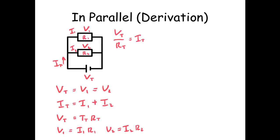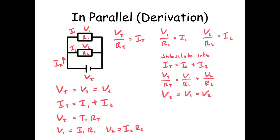So Vt over RT equals It, V1 over R1 equals I1, V2 over R2 equals I2. We substitute into the equation and we get Vt over RT equals V1 over R1 plus V2 over R2. But we know Vt is equal to V1 which is equal to V2.